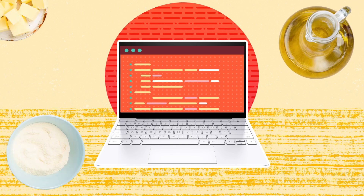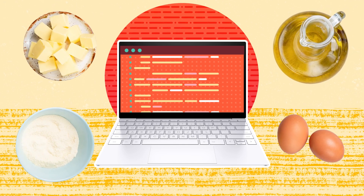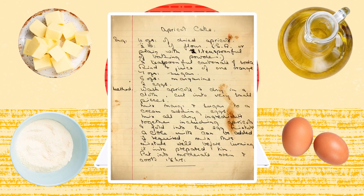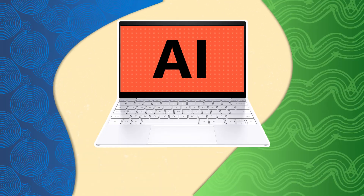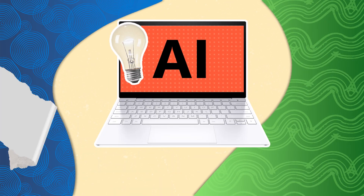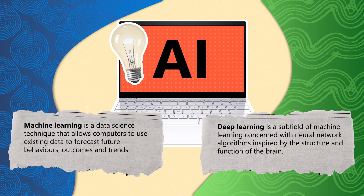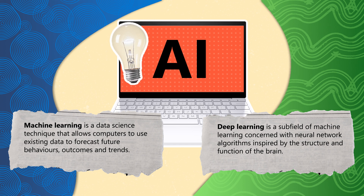Imagine these algorithms as a set of instructions that guide a computer to solve a problem, much like a recipe guiding you to bake a cake. Machine learning, a subset of AI, encompasses deep learning as one of its own subsets. These subsets represent different methodologies through which a computer system can learn from data to solve problems.